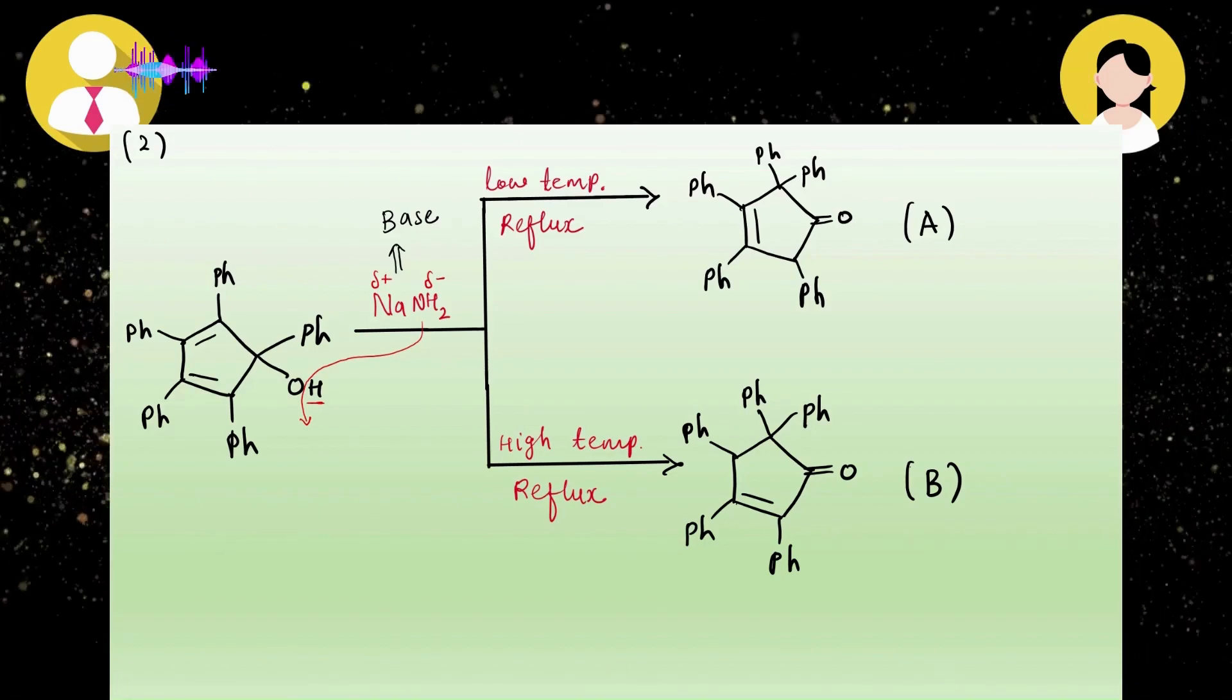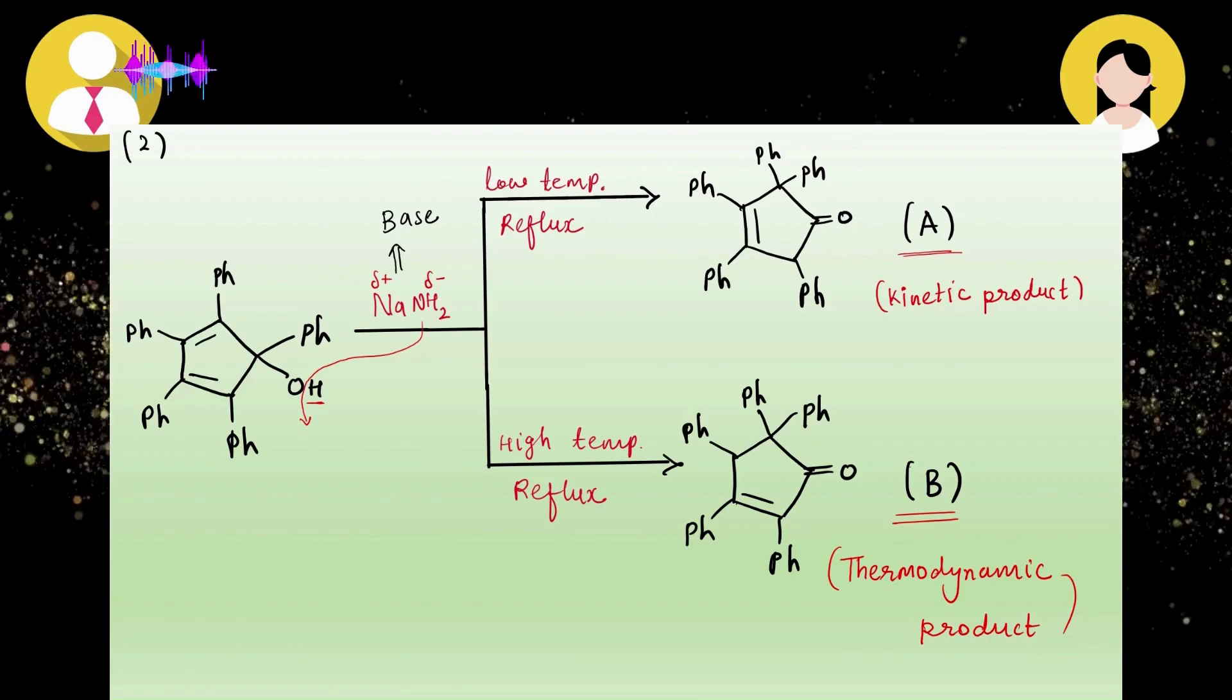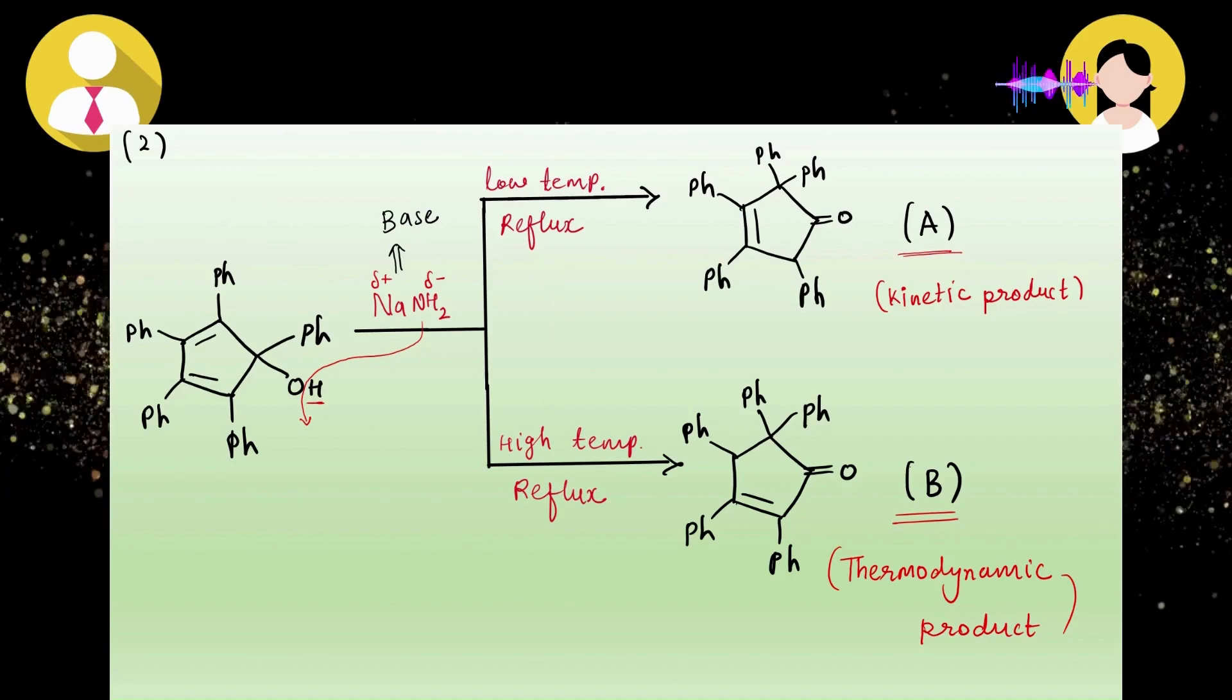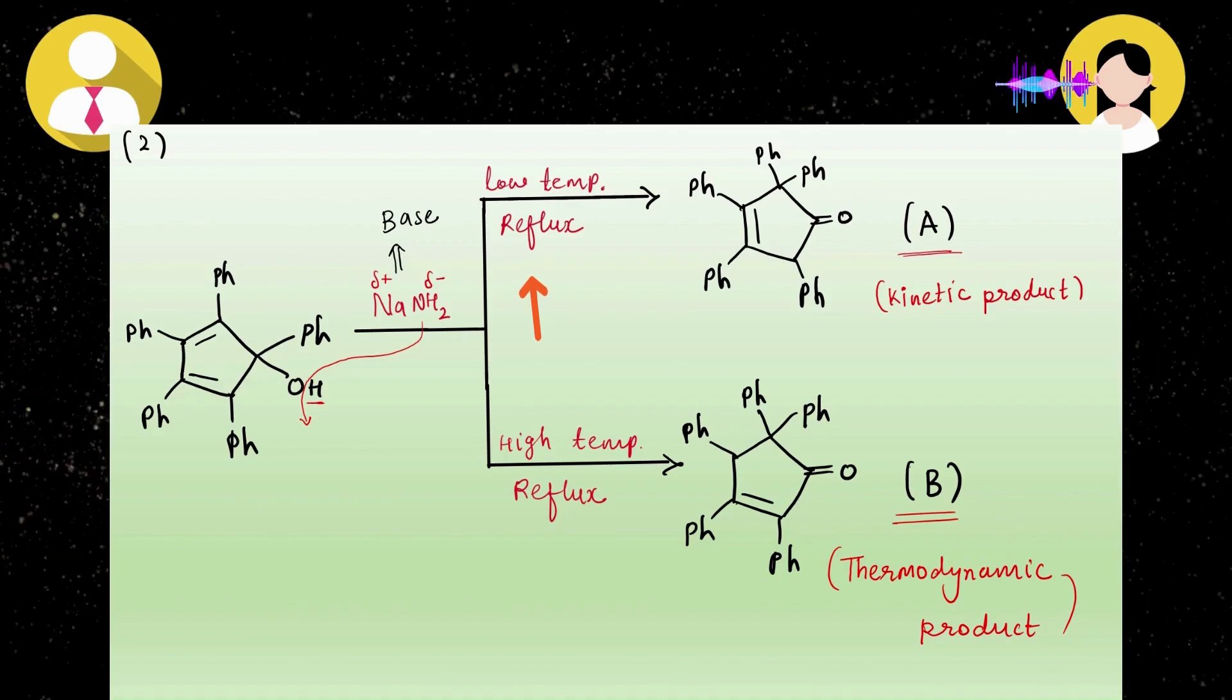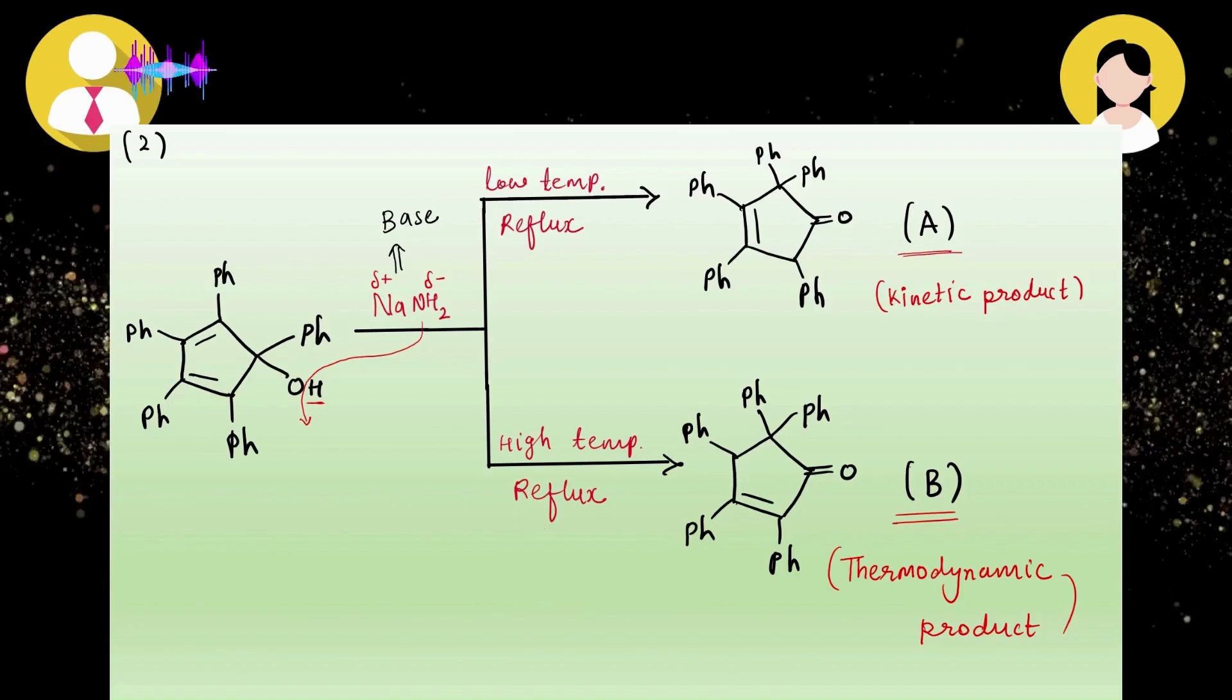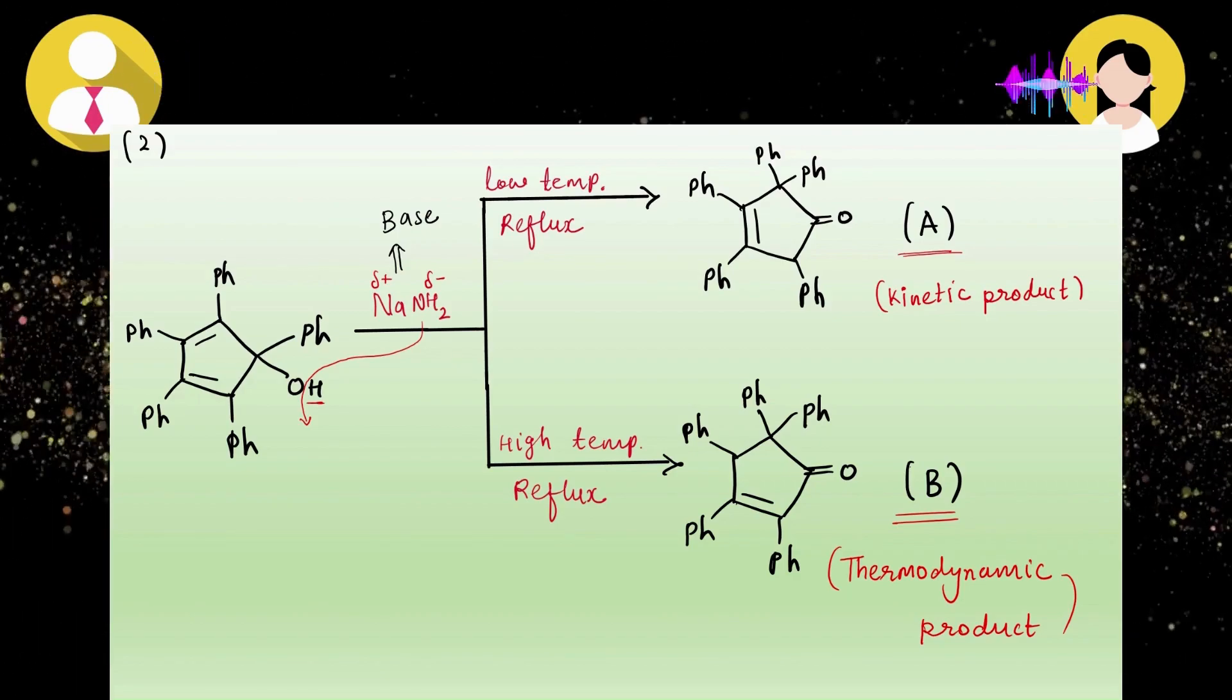He asked have you heard of thermodynamic and kinetic products? I said yes sir. He said in the given products A and B, which one is thermodynamic and which one is kinetic product? I replied product A is kinetic and B is thermodynamic. He said okay, on what basis are you saying this? I said on the basis of given conditions. He asked how. I said if you look at product A, it is forming at low temperature and kinetic products are favored at low temperature. Product B is forming at high temperature, which is thermodynamically favored.